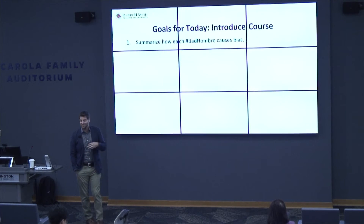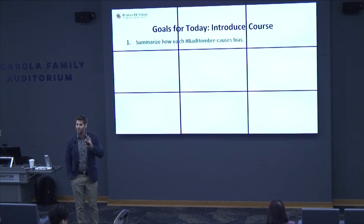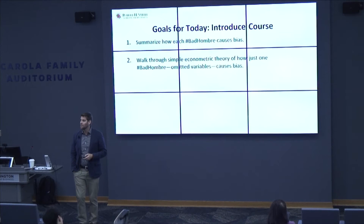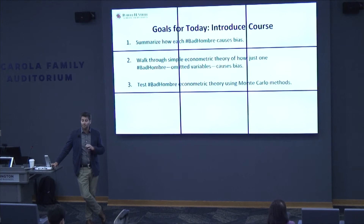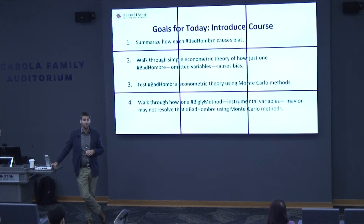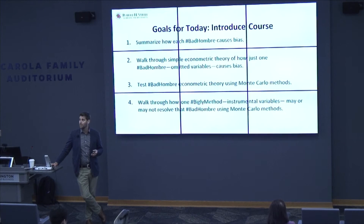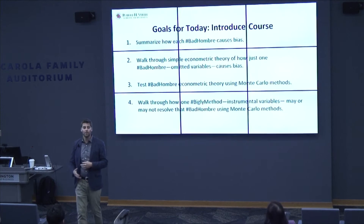My goals for today: I want to introduce the course. I'm going to summarize briefly how each bad hombre hurts you — how it can go awry. And then I'd like to walk through a simple econometric theory of just one bad hombre. We're going to go with omitted variables today because it's one of the easier ones. We're going to talk about how that causes bias. Then we're going to test our very simple econometric theory using Monte Carlo methods, and walk through how one Biggley method — instrumental variables, probably the most commonly used method — may or may not resolve this bad hombre.